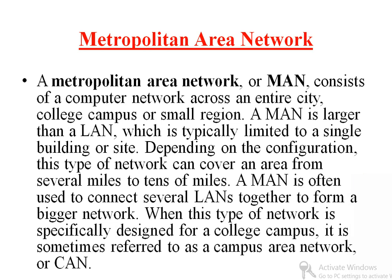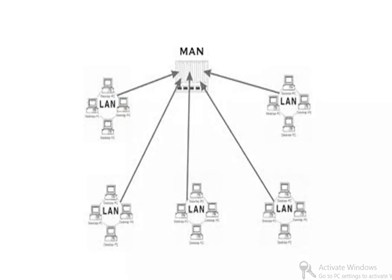A MAN is often used to connect several LANs together to form a bigger network. When this type of network is specifically designed for a college campus, it is sometimes referred to as a Campus Area Network or CAN. For example, in a big university campus you have different buildings connected with each other — we refer to that as a Campus Area Network. For example, we have LAN one, two, three, four, five, all interconnected within a single geographical area, so we call it a MAN or Campus Area Network.